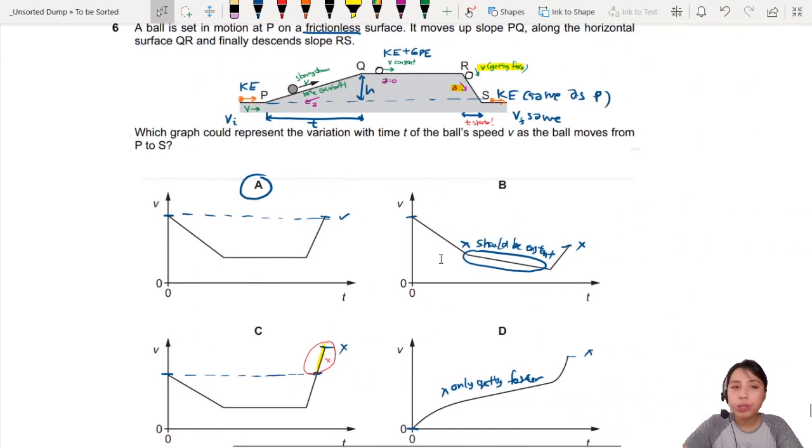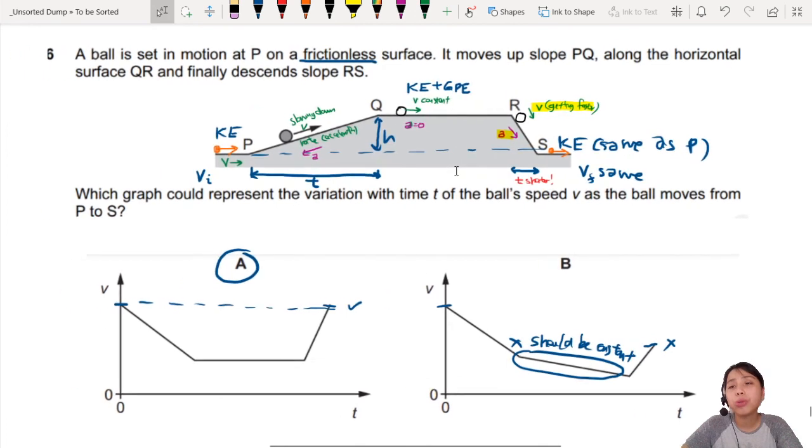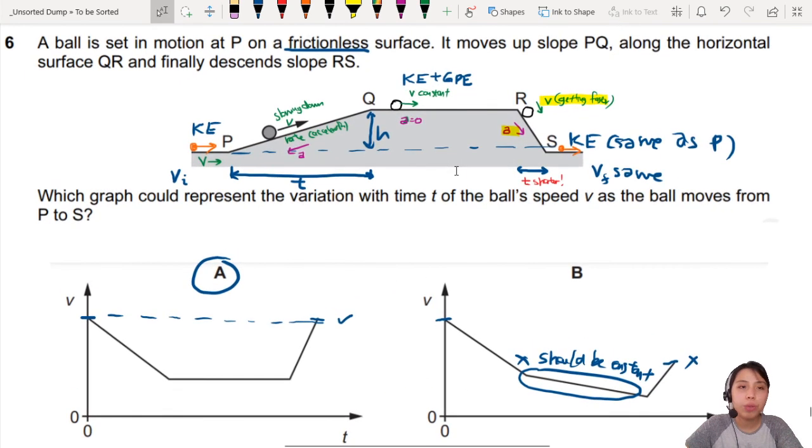So, make sure you know how to do both methods. And this is kind of generally true for almost all scenarios where you have to do a graph. You can use energy. Friction, no friction, it's the same. Or, you could use your kinematics to understand what is happening here. Alright, so that's the end of this question. Ball rolling up and down a frictionless surface. Thank you.